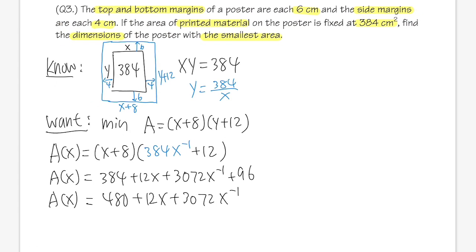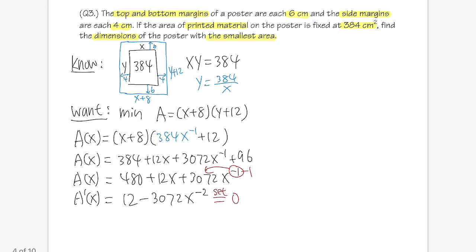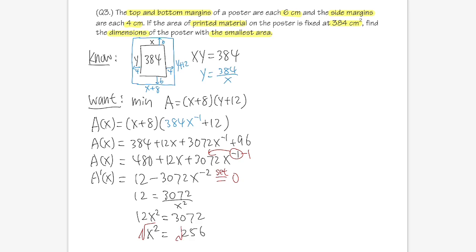Second derivative: A''(x) = 6144x⁻³. Plugging in x = 16: the top is positive and bottom is positive, so A''(16) > 0. Since A'(16) = 0 and A''(16) > 0, there is a minimum at x = 16. Finding y: y = 384/16 = 24.